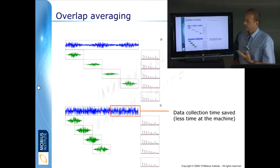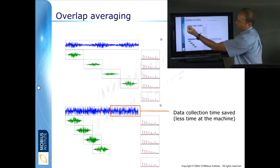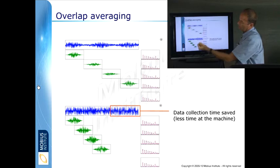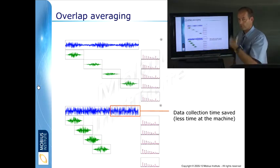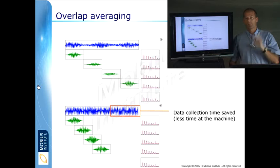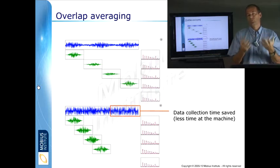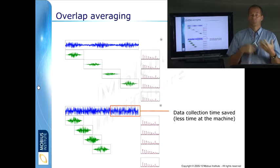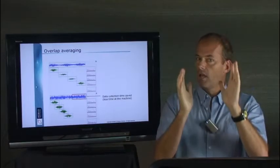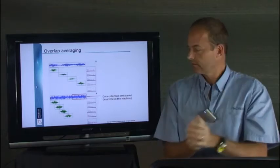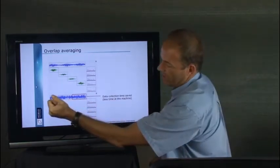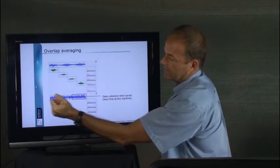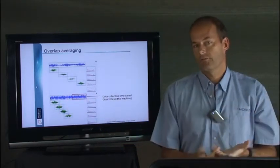And another bonus is that whereas to do averaging without overlap, we used all this time, when we use overlap averaging 50%, we save this time. This is time that you're not standing next to the machine out on your route. So it means you can test the machine more quickly. As long as the vibration that we are listening to is enough vibration.